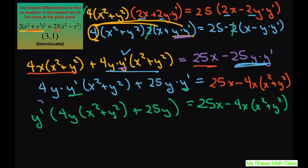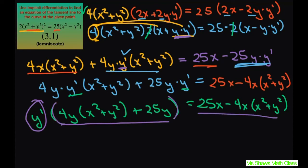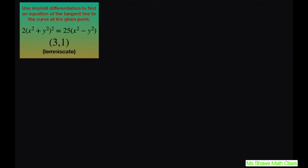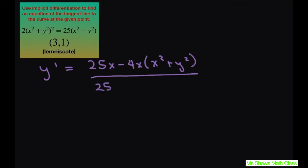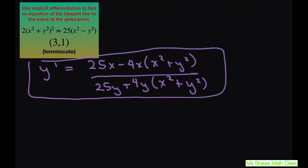After that, we're going to factor out the y prime: y prime times the quantity 4y times x squared plus y squared plus 25y equals the right hand side. Then we solve for our derivative by dividing both sides by that quantity. So y prime equals 25x minus 4x times x squared plus y squared, all divided by 25y plus 4y times x squared plus y squared. That's your derivative, but we still have to find the equation of the tangent line.